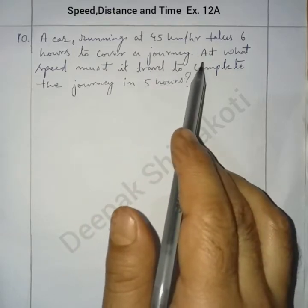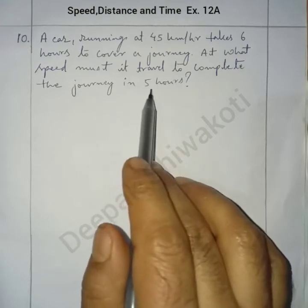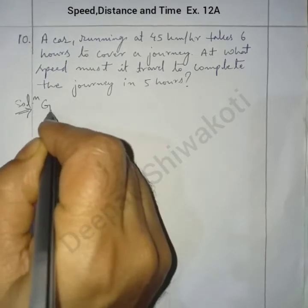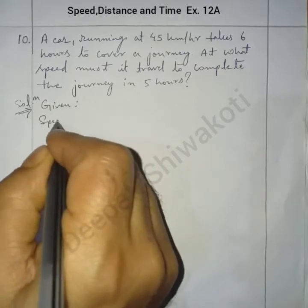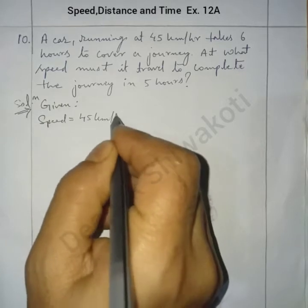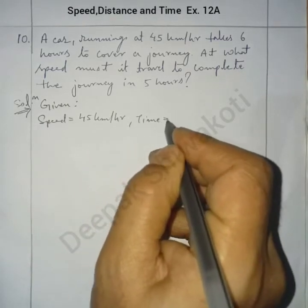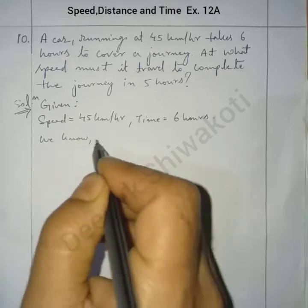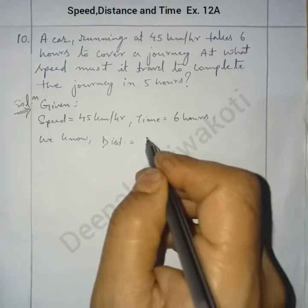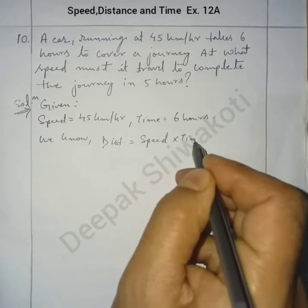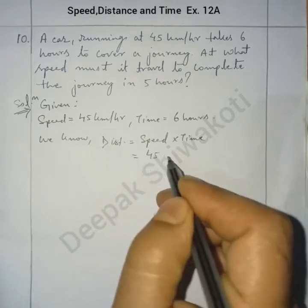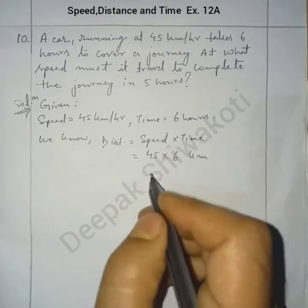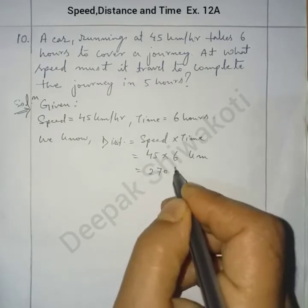And then again we have to determine the speed for the new time. Given: speed equals 45 kilometers per hour, time equals 6 hours. We know distance equals speed multiplied by time, so distance equals 45 into 6, which equals 270 kilometers.